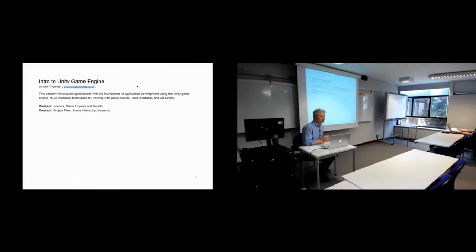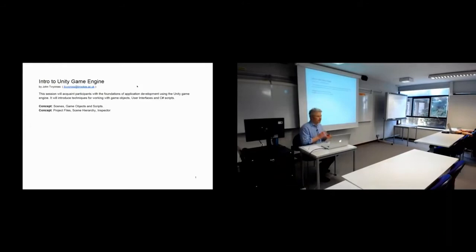Everything that is in a scene is referred to as a game object. Everything is an object and it can have scripts attached to it — these are called components. A game object in its very essence is referred to as a transform, and it won't have any rendering or other elements. But if it's a 3D object like a cube, you will have rendering capability to show it within the scene.